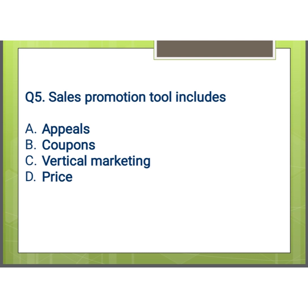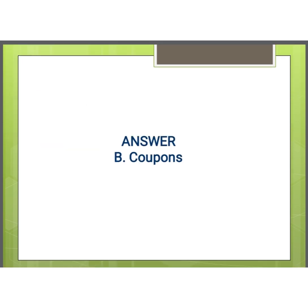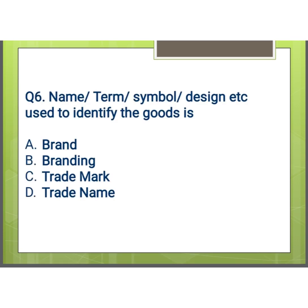Our next question is: sales promotion tool includes what? Options are: A) appeals, B) coupons, C) vertical marketing, and D) price. And our answer is B, that is coupons.